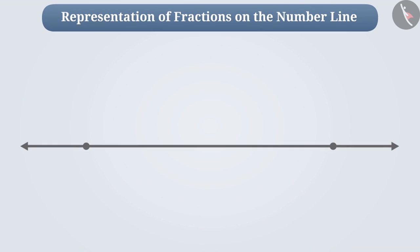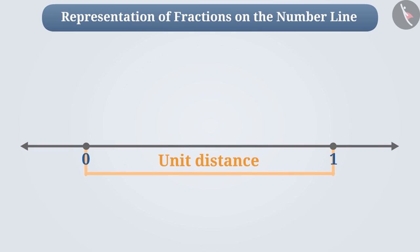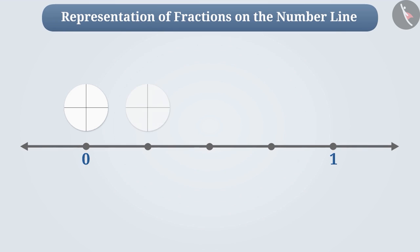Let's represent it on the number line. In order to do this, we will make a number line. To represent the fraction in a convenient way, we will keep the unit distance larger. Since we have made four equal parts of the paper, let's divide all the unit distances into four equal parts. Here we have taken one part out of four parts, so let's take one part on the number line and mark this as fraction one by four.